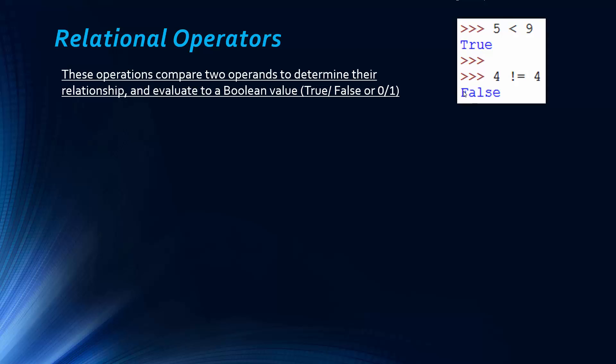So this is just using the Python interactive shell to do this. So essentially this is just evaluating this condition. 5 is less than 9. And that's true. So we get true back. And this is saying is 4 is not equal to 4. Well, it is. So we get false.